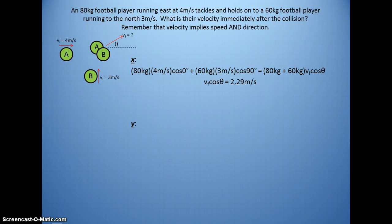For the Y-axis, we use sine. The 80 kilogram mass is moving to the right. So it's 0 degrees. Sine of 0 is 0. In the future, some of you may just put 0 here and then write plus 60 times 3 sine 90. They are stuck together. So we add their masses together. Times the final velocity times the sine of an unknown angle. The best we can do here is reduce this down to VF sine theta equals 1.29 meters per second.